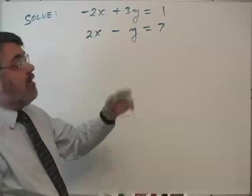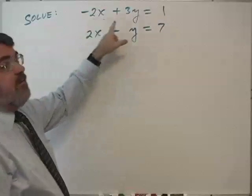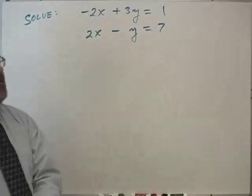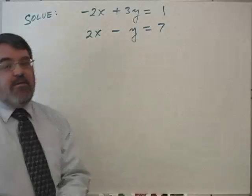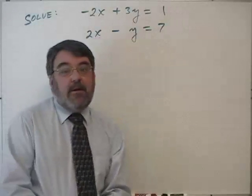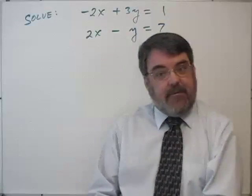And here's an example. Solve negative 2x plus 3y equals 1, 2x minus y equals 7. And these are linear because each variable carries an exponent of 1.